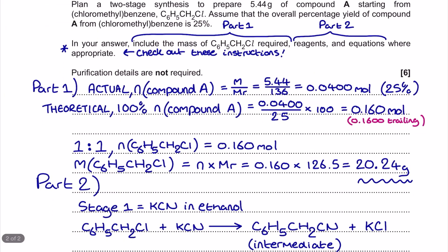So my part one is going to be the calculation. I'm going to start off by determining how many moles are in this 5.44 grams of compound A that I've been told to synthesize, and it turns out if I do mass divided by the MR here then I get a mole value which is 0.04 and then there's trailing zeros there for the mole figure. Now remember that's my 25% that actually gets achieved, that's the one that we're going to get at the end of all of this.